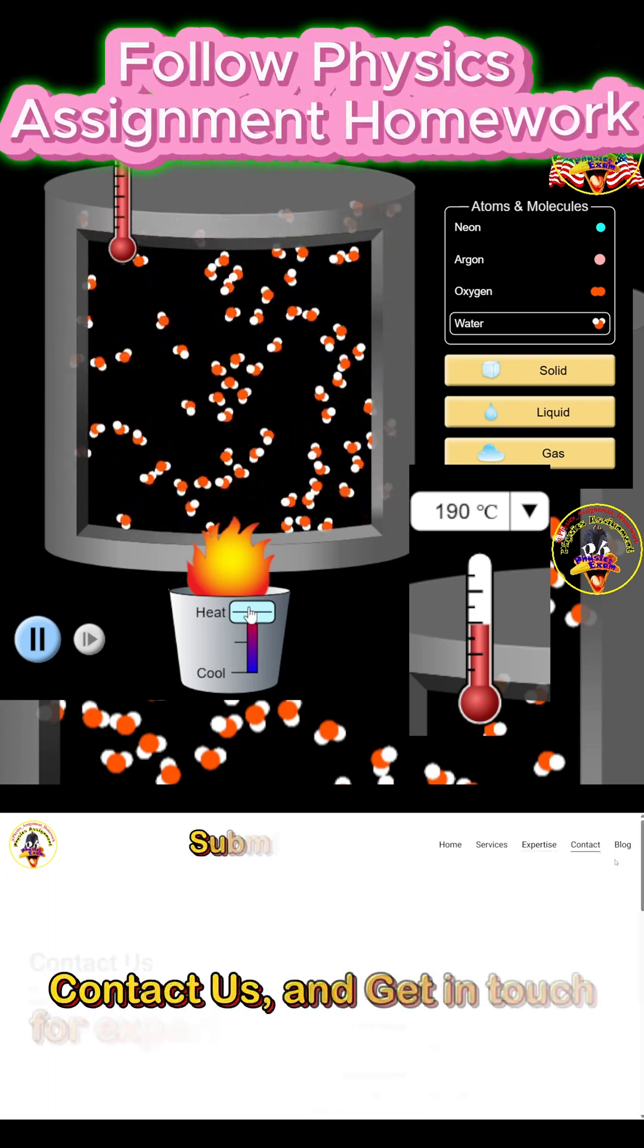Water boils to gas at 156 degrees Celsius. Neon remains a gas at any temperature above minus 217 degrees Celsius due to its extremely low boiling point. Thanks for watching. Follow Physics Assignment Homework.